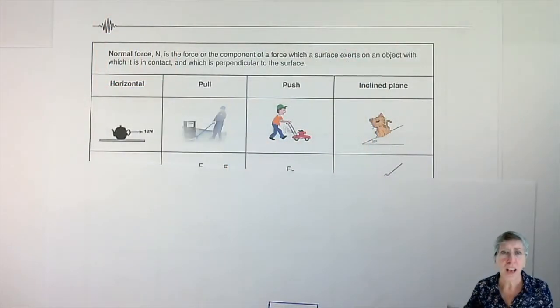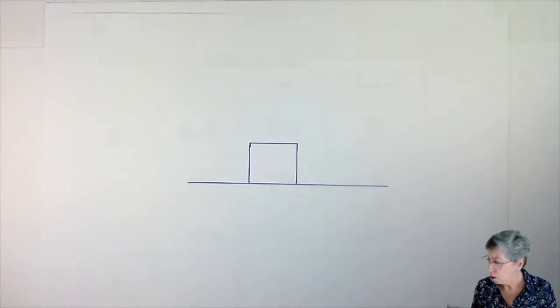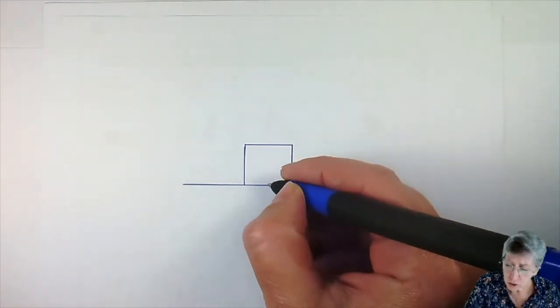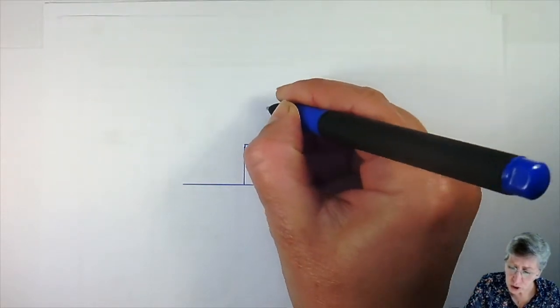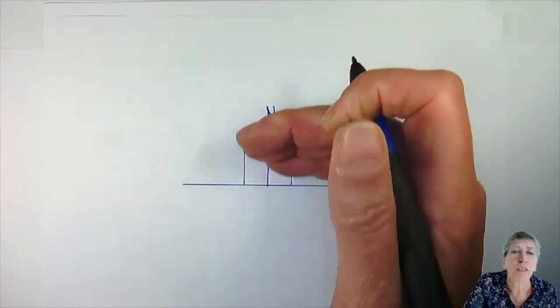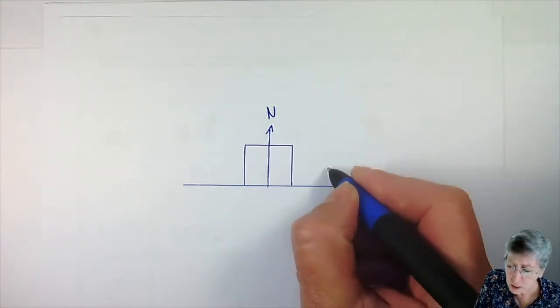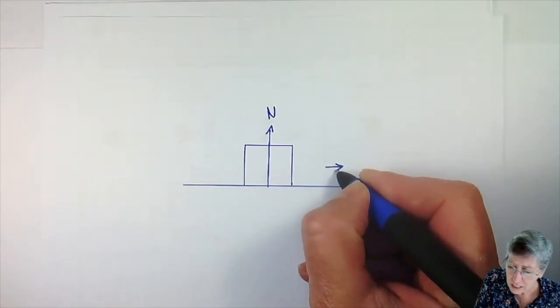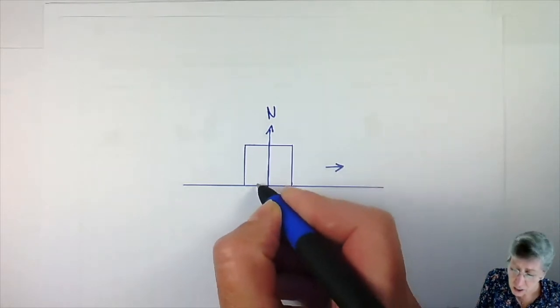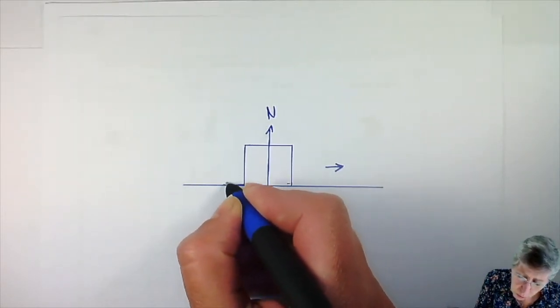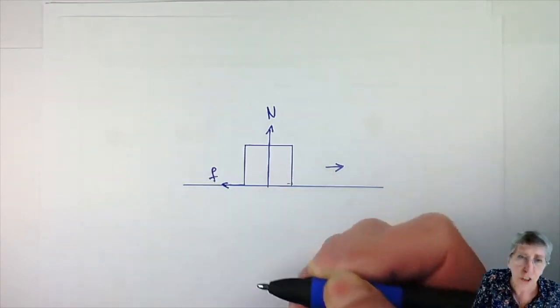Now we focus on normal force and frictional force. Both the normal and the frictional force are forces that are exerted by the surface. The normal force is the force exerted by the surface to keep you from sinking into the surface, and the frictional force is the one opposing movement, or the tendency to move. So if you are moving in that direction, then the surface will exert a frictional force.